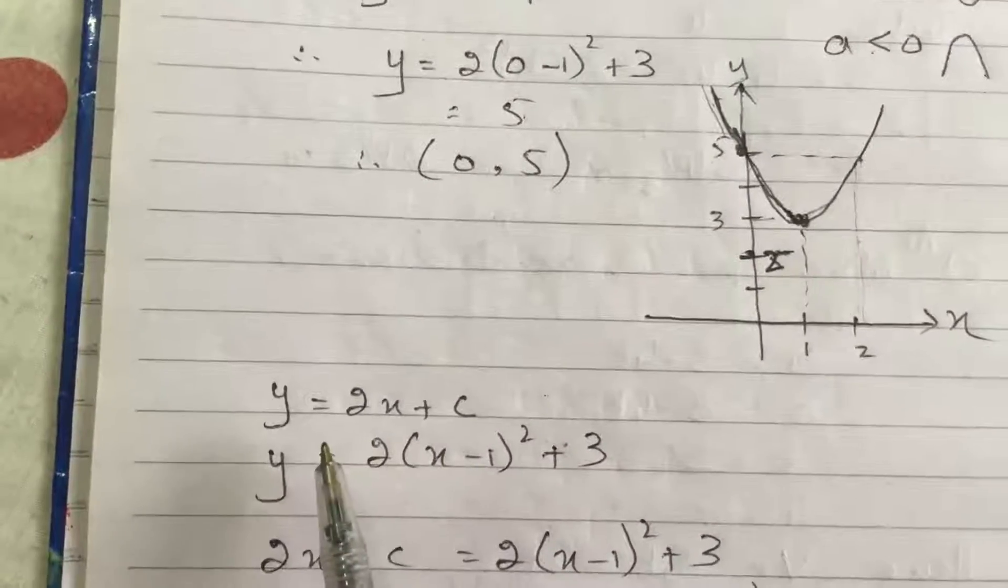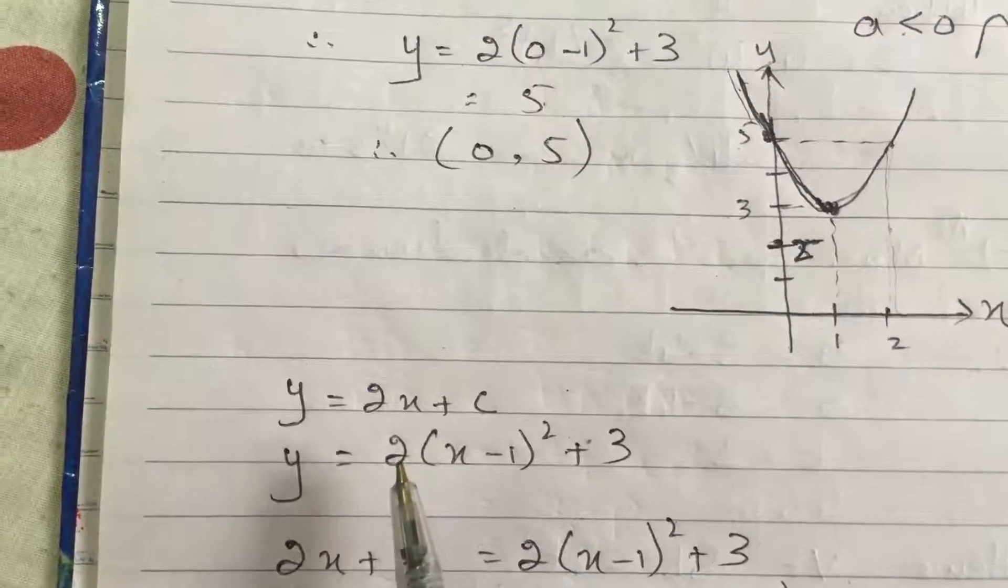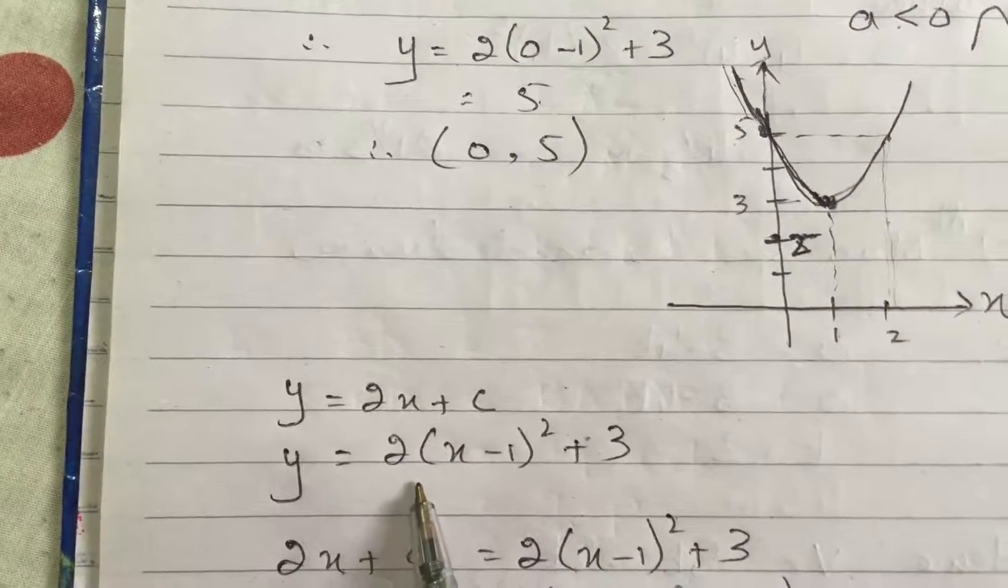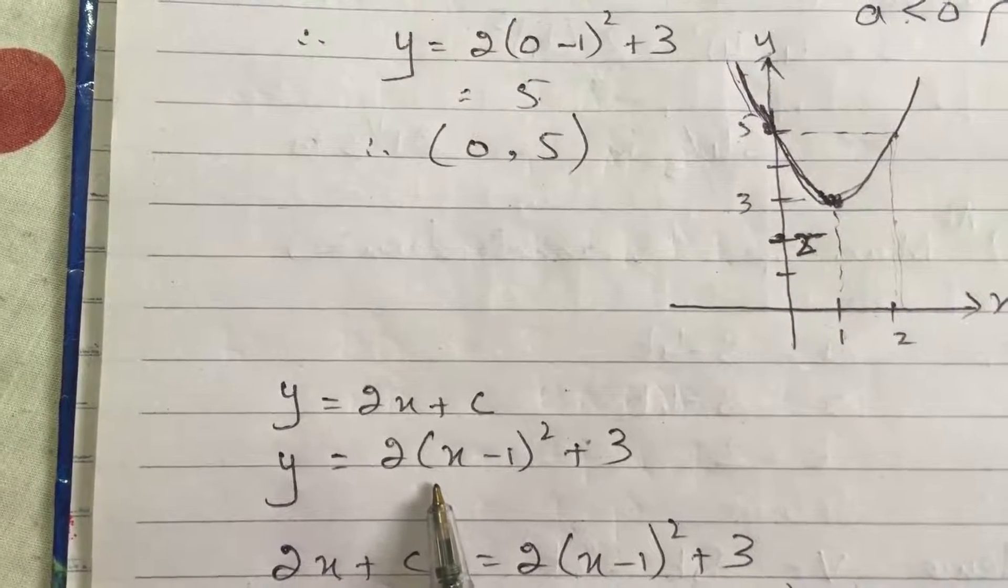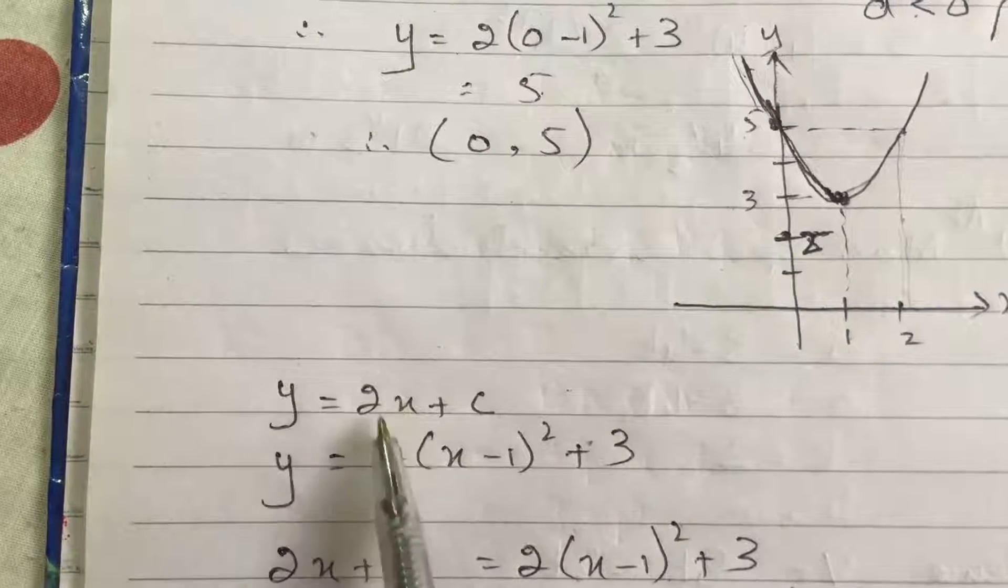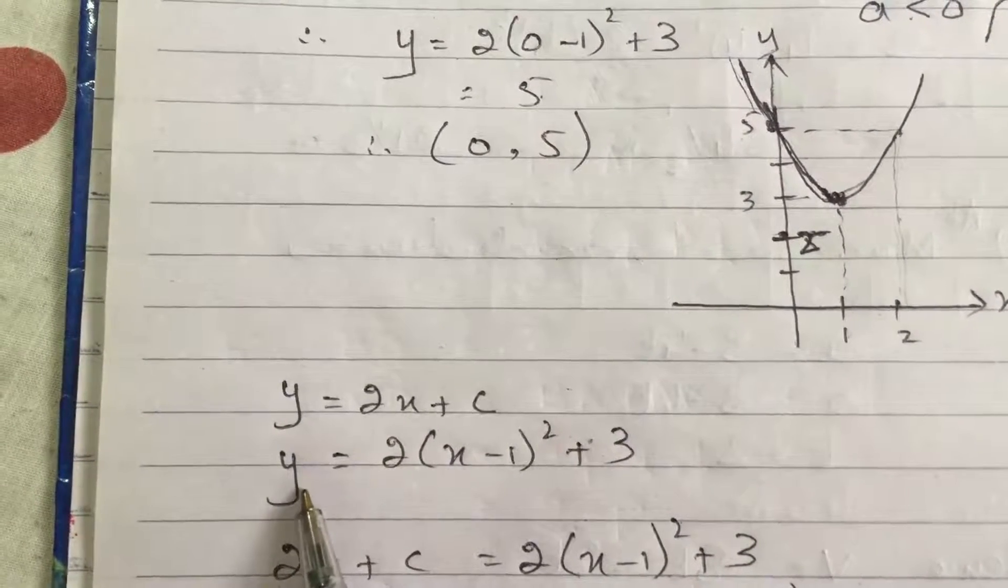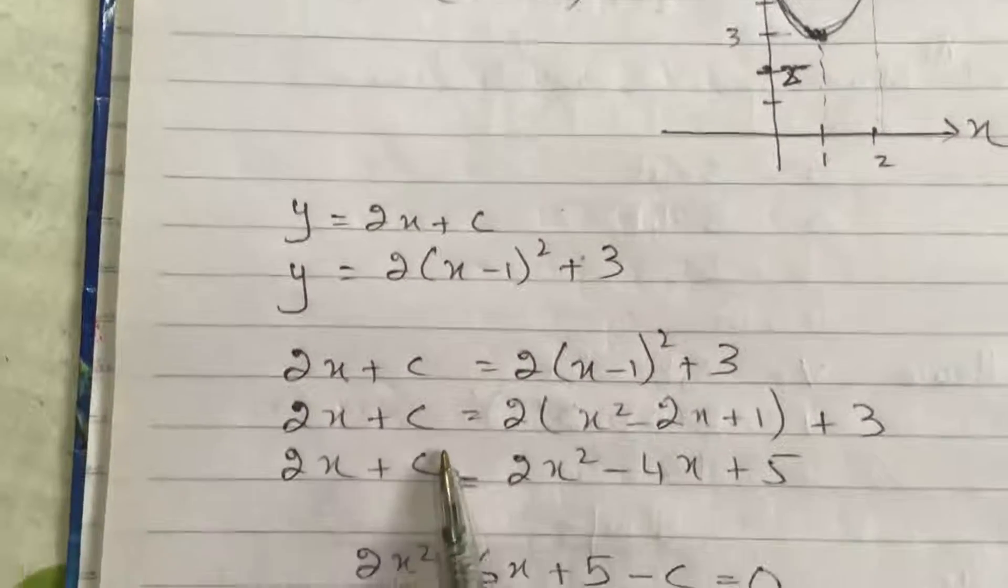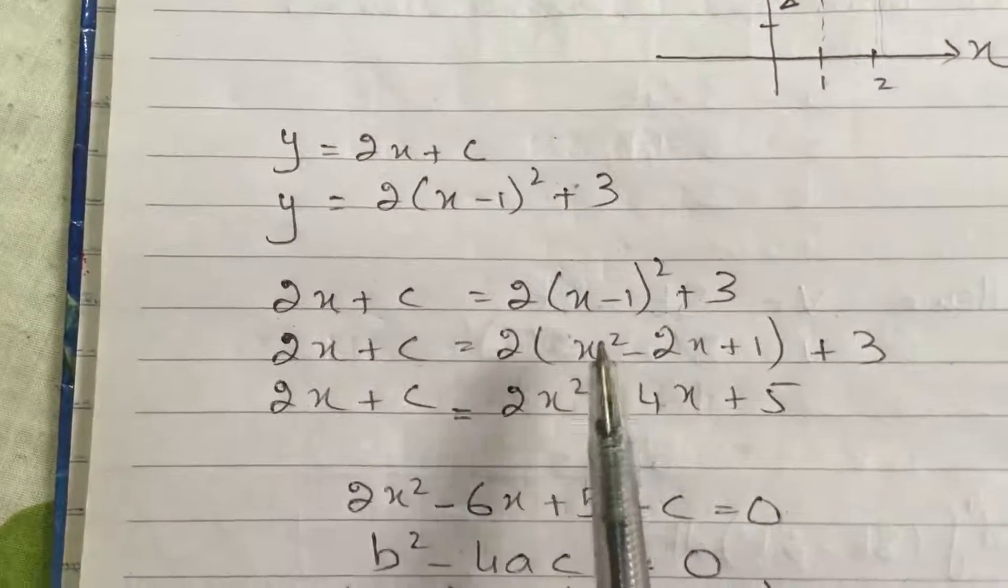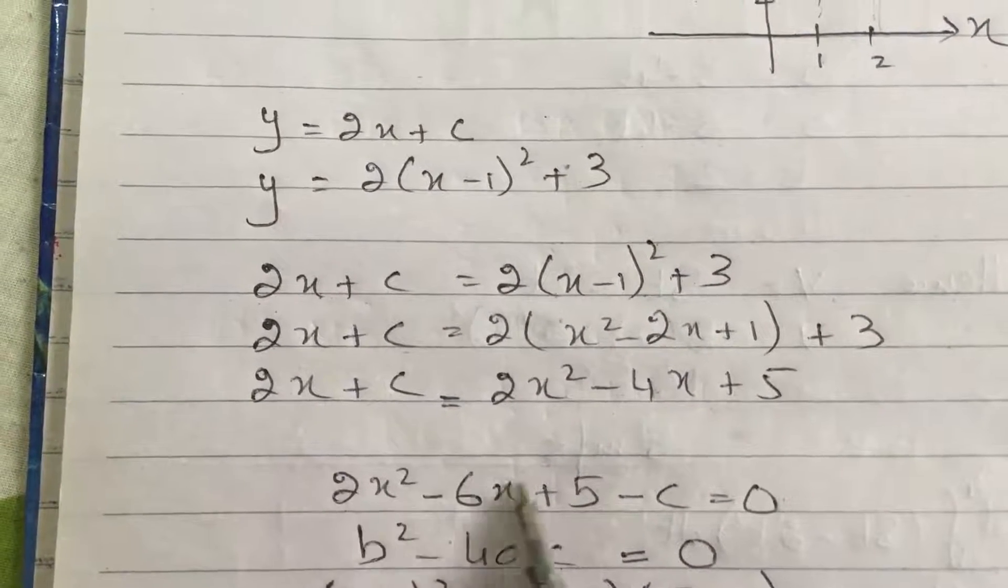Then we have to find for what values of c, the line which is this, is tangent to the curve. Now we know when line is tangent to the curve, the discriminant is equal to 0. So we will substitute this value of y over here, and then rearrange this whole equation into general equation of a quadratic form which is ax squared plus bx plus c. So here we have done this.